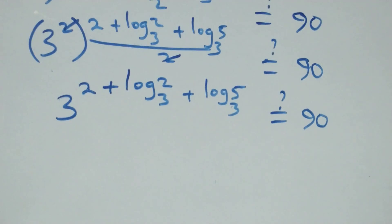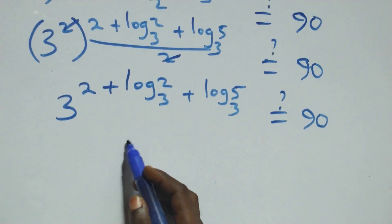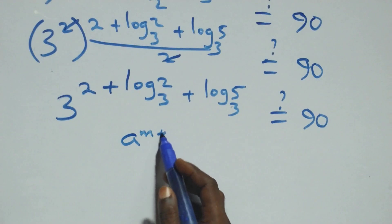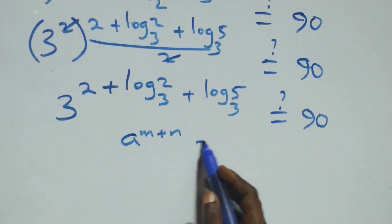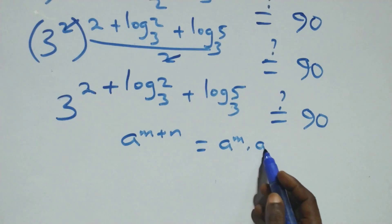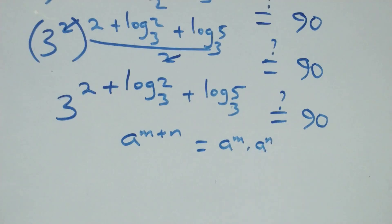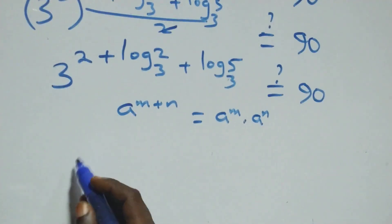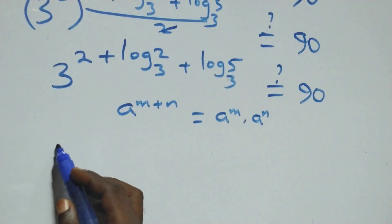And here we apply the law of indices: when we have a raised to power m plus n, this is the same thing as a raised to power m times a raised to power n.